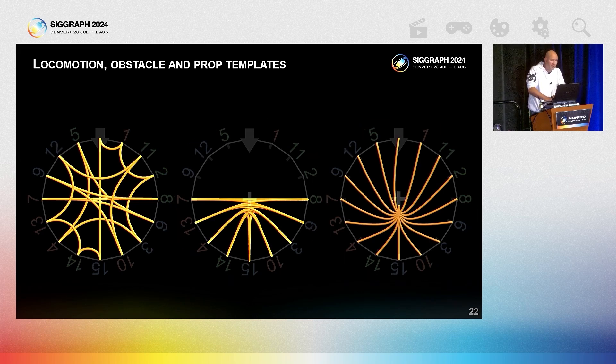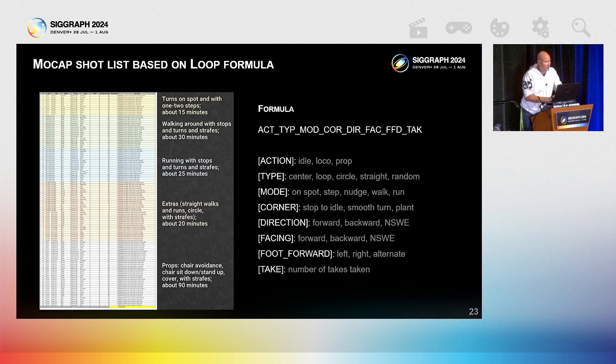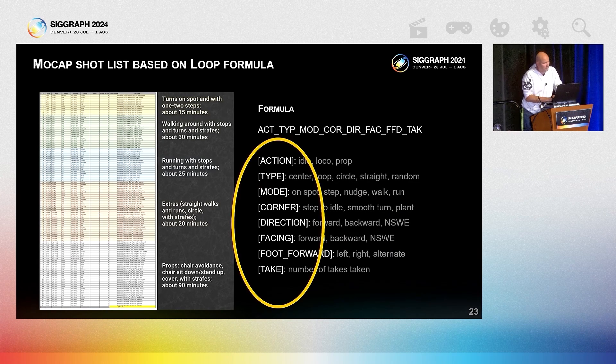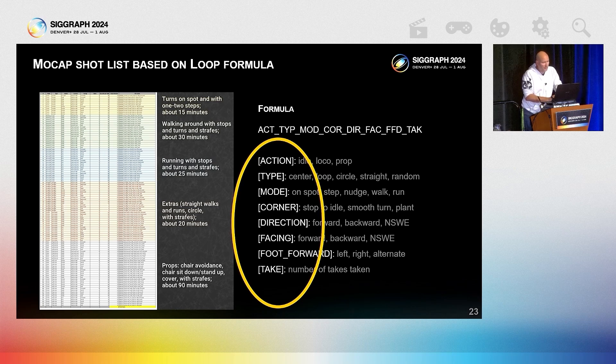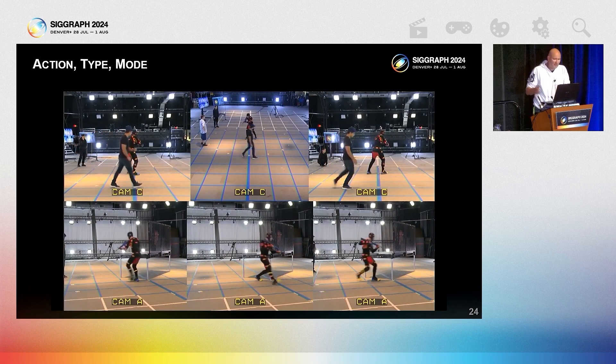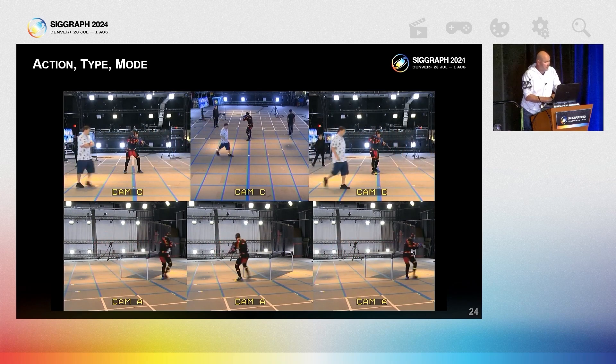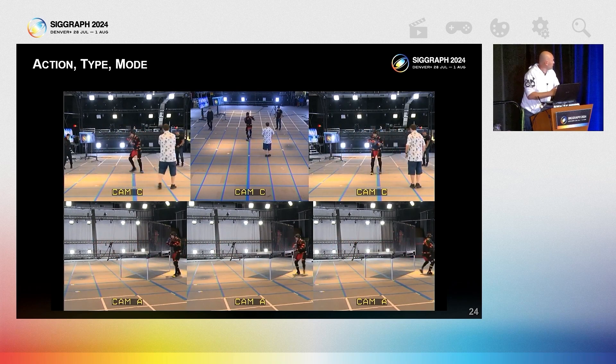The mocap shot list is a product of a formula which describes combos of modifications we want. Not all of these are mandatory and you can add your own. Action stands for the concept of motion such as idles, locomotions, props, rolls, crouch, carry, speech, or dance. Type includes the specific way loop is used: center loop, walls, props.